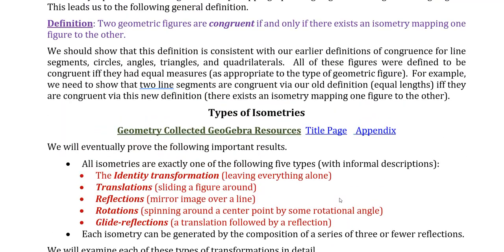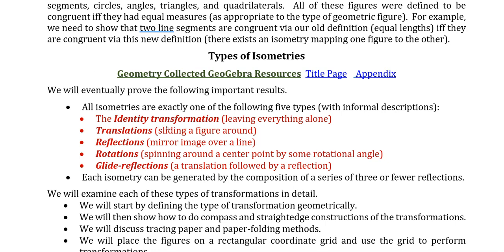In our last video we looked at the idea that there are going to be five types of transformations that are isometries, distance-preserving mappings: an identity transformation, the one that leaves everything alone, translations, just sliding a figure around,